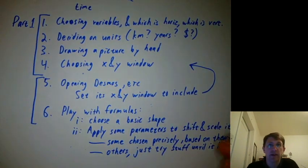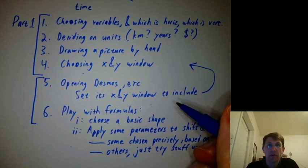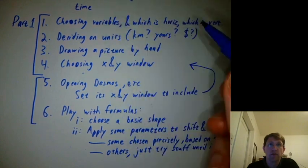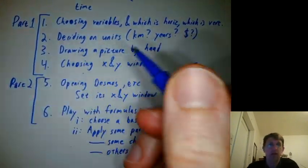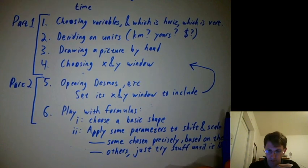And then parts five and six, that's when we're trying to come up with actual formulas to match the drawings we had. So you'll see a description of the part one, part two distinction in the homework file.